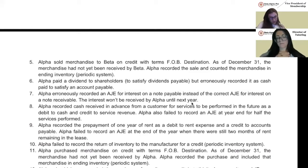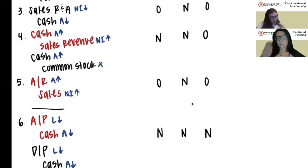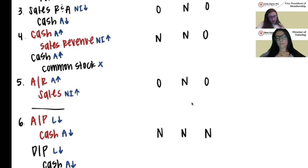Alpha did record the sale by debiting accounts receivable and crediting sales, which they shouldn't have. They also correctly left the merchandise in their inventory. The debit to AR increased assets when it shouldn't have, so assets are overstated. Neither account affects liabilities, so no effect there. Sales were increased, which means net income was increased when it shouldn't have been, so net income is overstated.